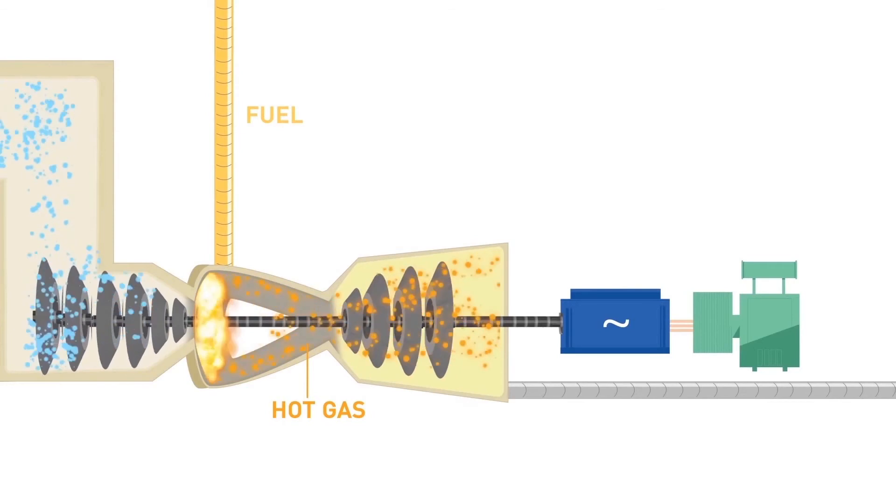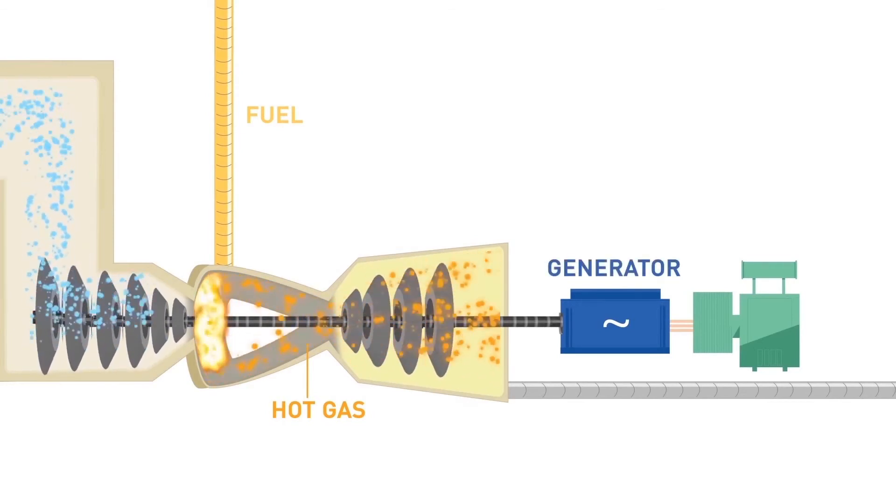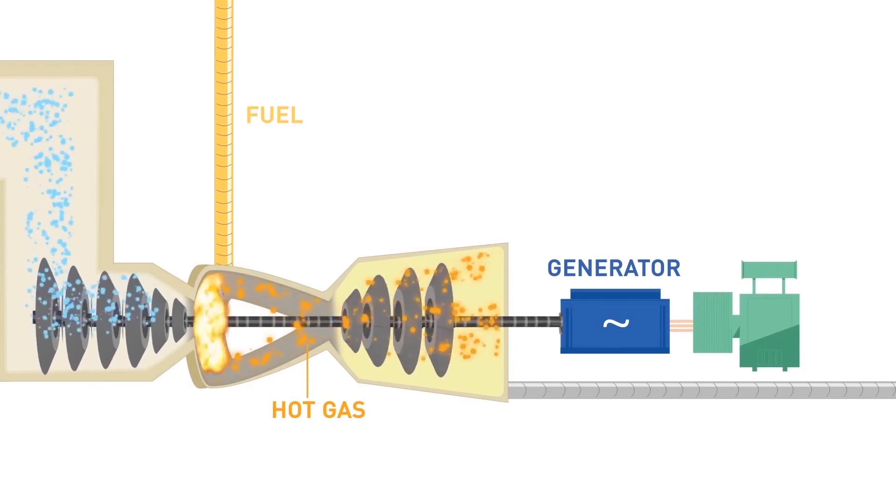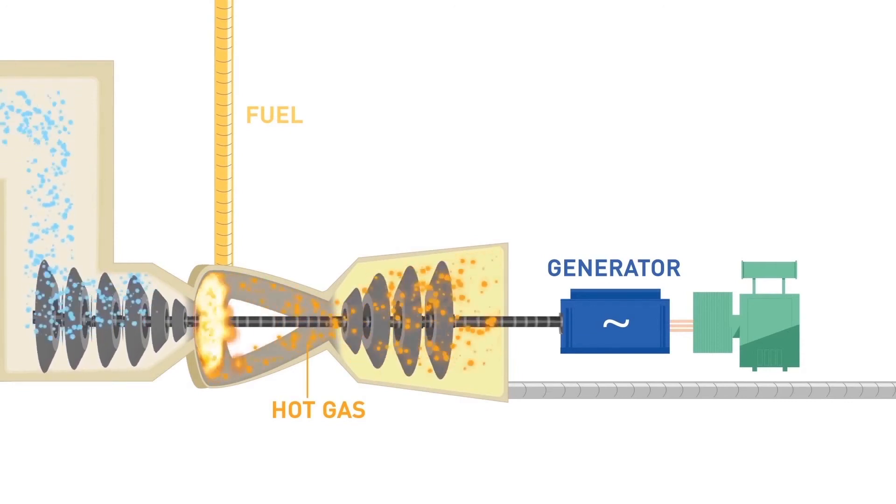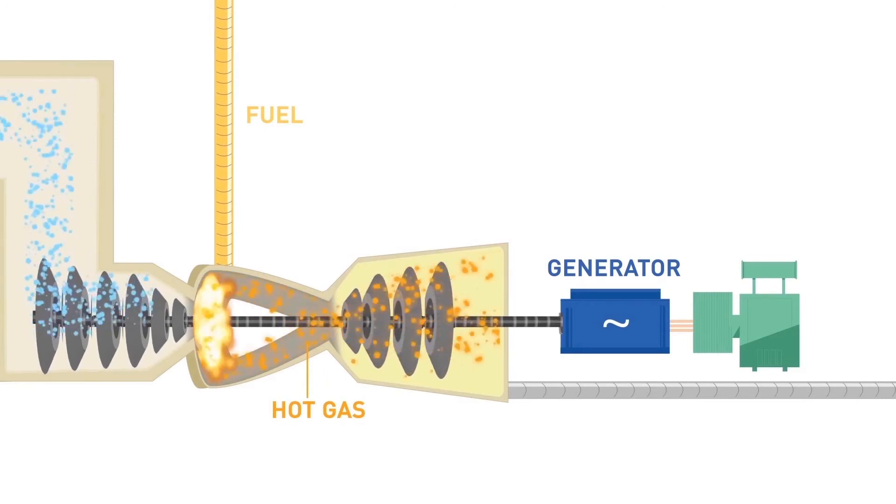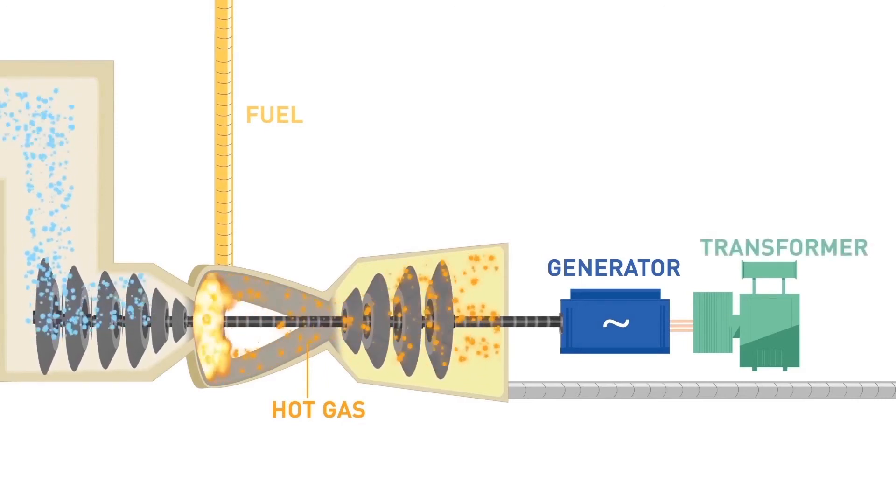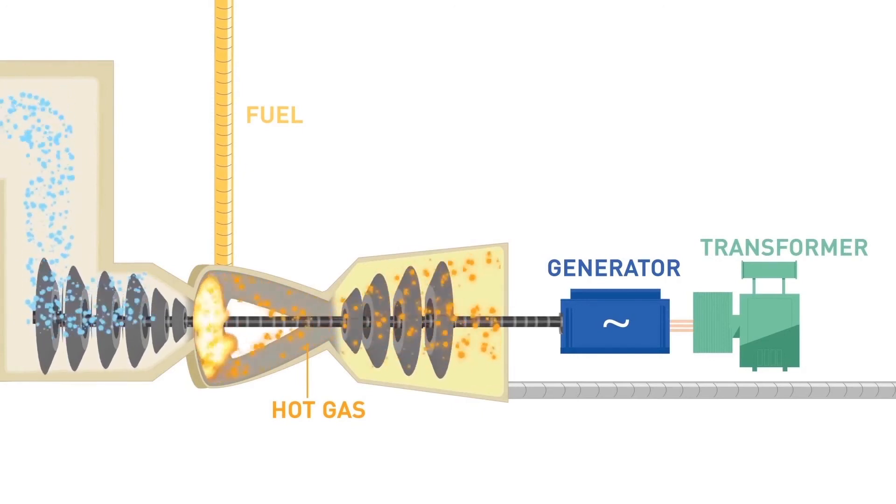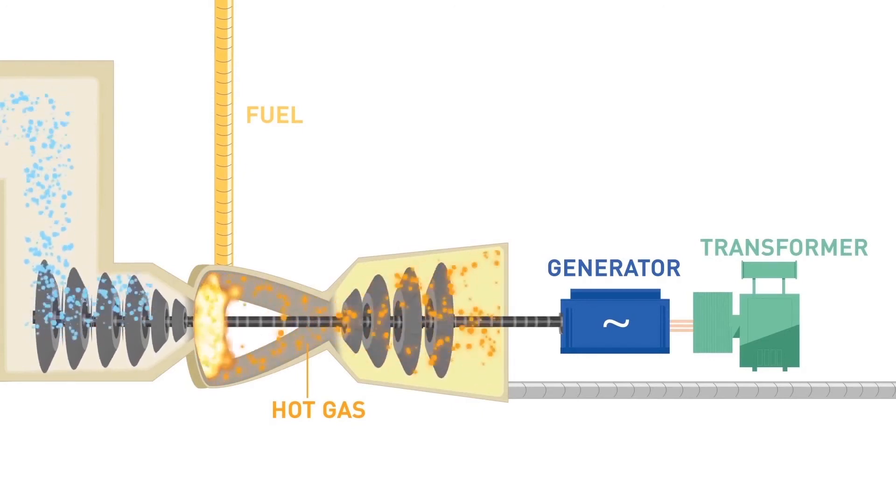The rotation of the drive shaft rotates an electromagnet within a three-phase stator inside the generator to produce electricity. The electricity produced is sent to a transformer where the voltage is stepped up to 220,000 volts and sent to our customer, Trinidad and Tobago Electricity Commission (T&TEC).